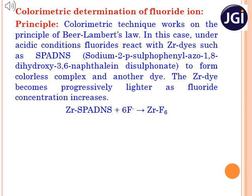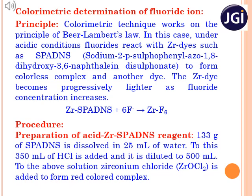The first step of the procedure is preparation of zirconium SPADNS reagent. Here, a known weight of SPADNS is dissolved in a known volume of water and added with hydrochloric acid. This solution is diluted, and after dilution, zirconium chloride is added to form a red colored complex.